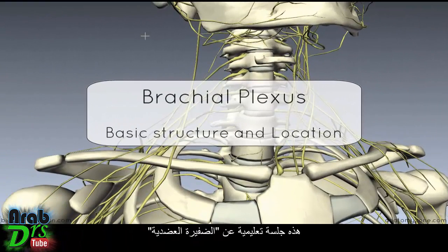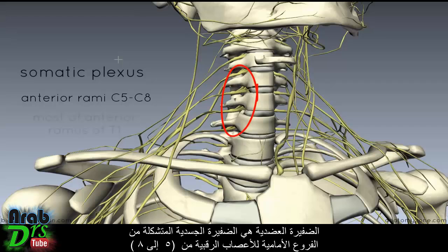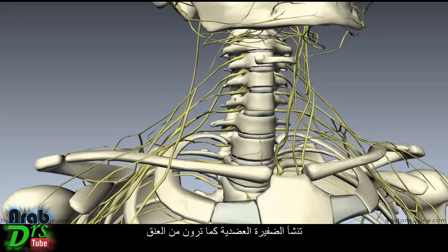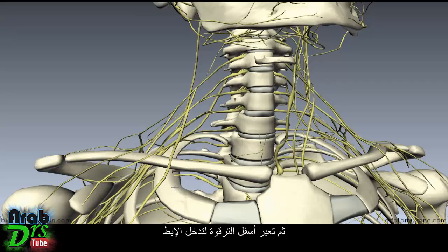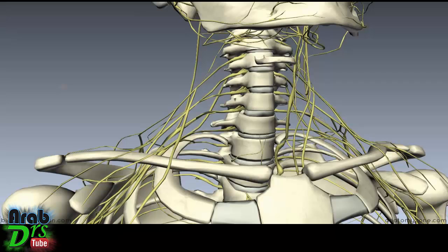This is a tutorial on the brachial plexus. The brachial plexus is a somatic plexus formed by the anterior rami of C5 to C8 and most of the anterior rami of T1. As you can see, it originates in the neck and then it passes over the first rib and goes underneath the clavicle to enter the axilla. We're going to take a look at some of the structures in relation to the brachial plexus and the basic layout of the brachial plexus.